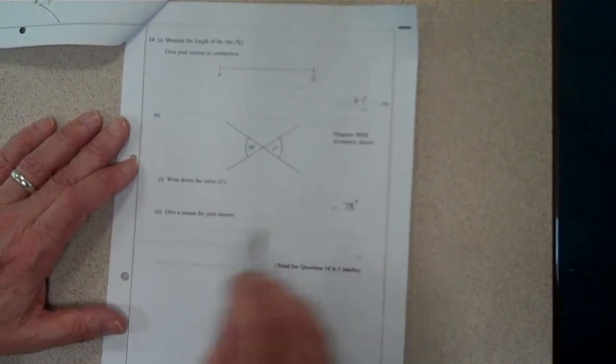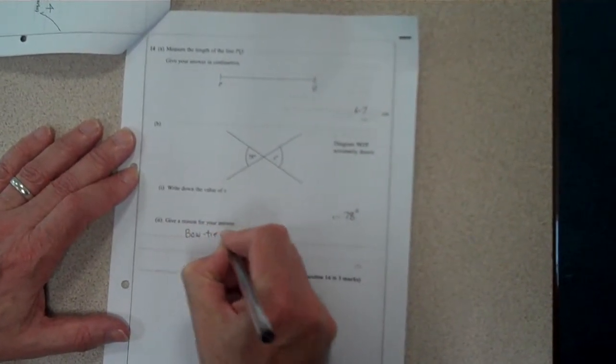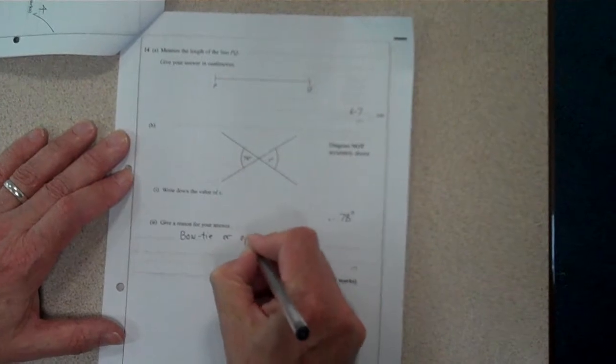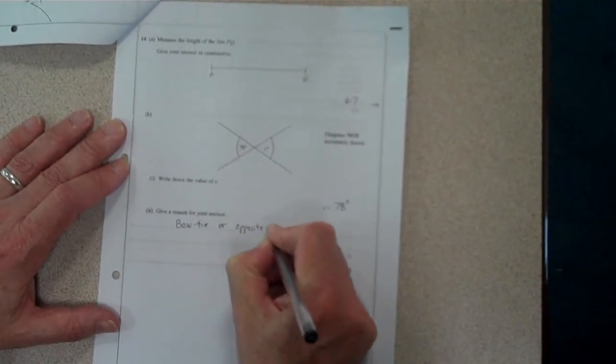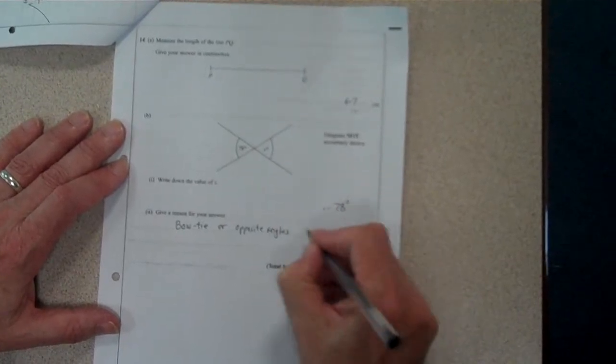That gets us one mark, give a reason for your answer, then you would put down bow tie or opposite angles are equal. And that is your answer to question 14. Thank you.